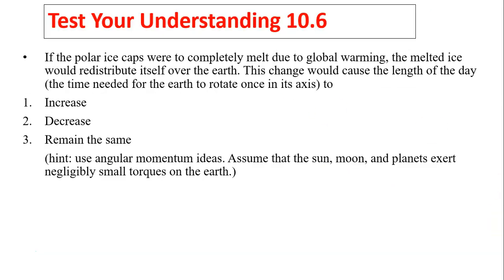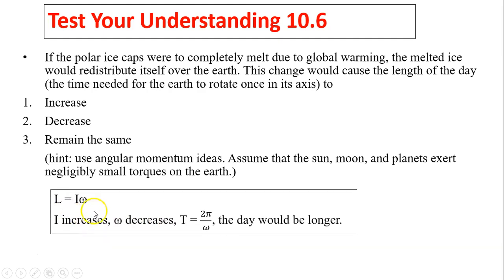Test your understanding. If the polar ice caps were to completely melt due to global warming, the melted ice would redistribute itself over the Earth. This change would cause the length of the day, the time needed for the Earth to rotate once on its axis, to increase, decrease, or remain the same? Use the angular momentum idea, assuming that the sun, moon, and planets exert negligibly small torque on Earth. In this case, if the polar ice were to melt, I would increase. If I increases, omega has to decrease because L is constant. Now, T equals 2 pi over omega. So if omega decreased, T would have to increase. Therefore, the day actually would be longer.